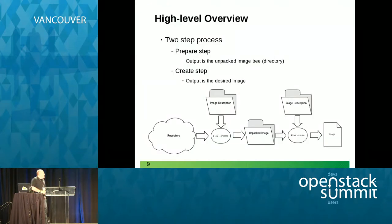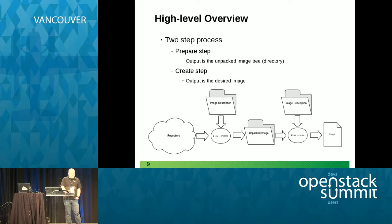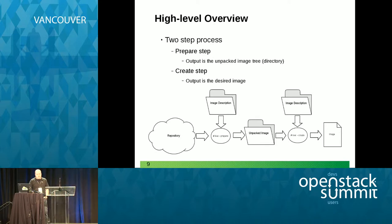At a high level, when we think about Kiwi and the build process, we can build a consistent image that can be consumed in a number of different areas — because of the two-step process used to build the images. The prepare process installs to a directory structure, and then the create step outputs that root directory — that pseudo root file system — into the image environment for whatever consumption mechanism you're looking for.